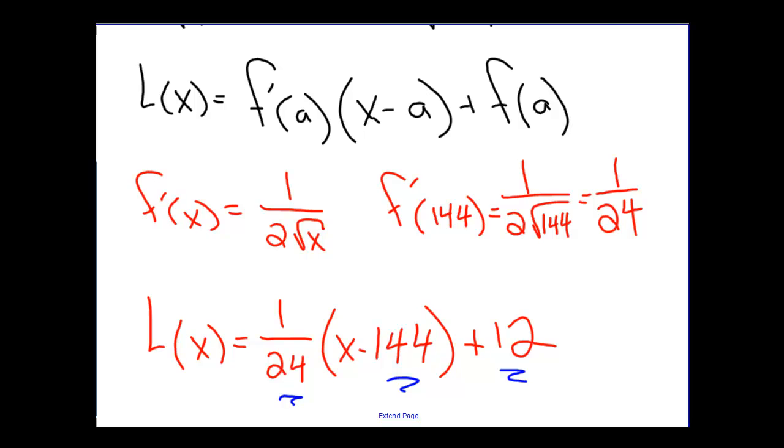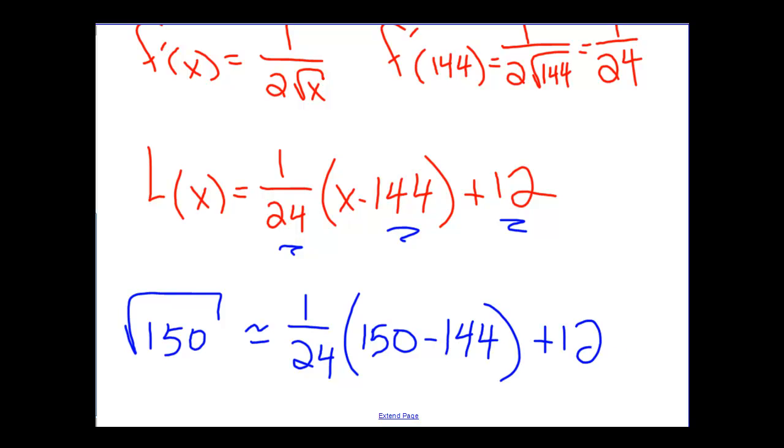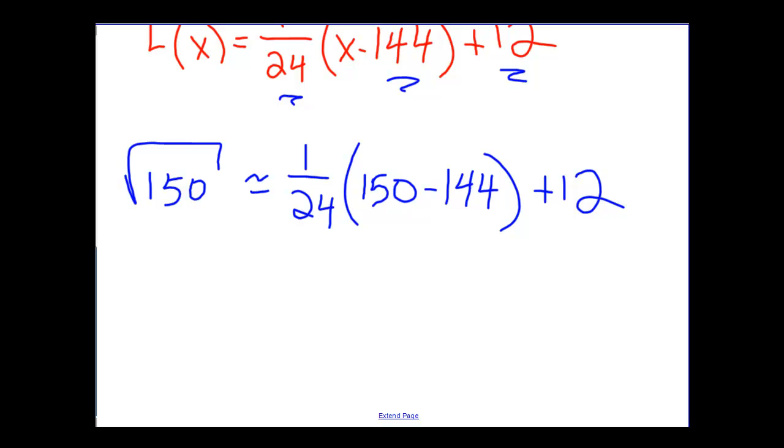Now we can use this to come up with the linearization or the approximation of the square root of 150. So we could say the square root of 150 is approximately equal to 1 over 24 times 150 minus 144 plus 12. The 150 there is the value we're going to evaluate it at, and we're going to see how close these two values are.